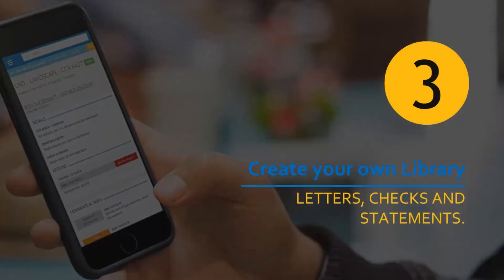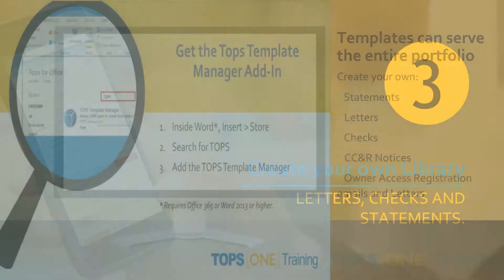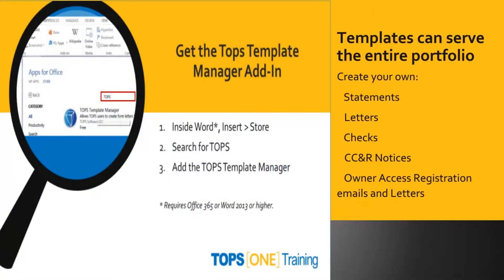Chapter 3: Create Your Own Library — Letters, Checks, and Statements. Templates can serve the entire portfolio. You can create your own statements, letters, checks, CCNR notices, owner access registration, emails, and letters — everything coming from the TOPS One system.